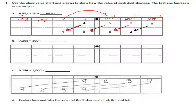Five tenths times ten equals five. Eight hundredths times ten equals eight tenths. And two thousandths times ten gives you two hundredths. So the answer is forty-five and eighty-two hundredths. Now the next one: seven and two hundred eighty-one thousandths — this time we're multiplying by 100.